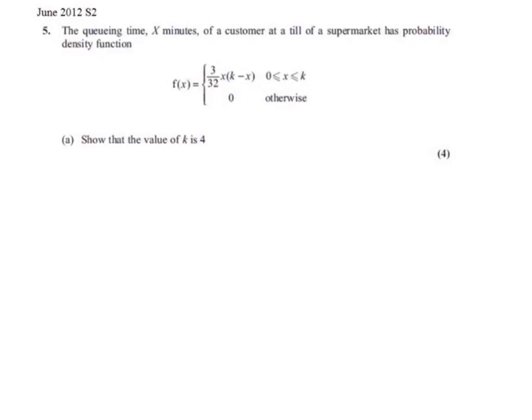Here we're told that the queuing time, x minutes, of a customer at a till of a supermarket has probability density function f(x) = 3 over 32x times (k minus x), where x is between 0 and k, and it is 0 otherwise. We're asked to show that the value of k is 4.